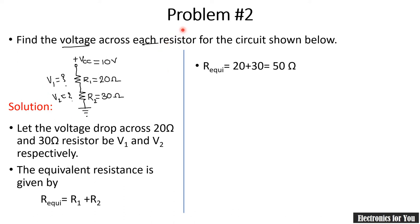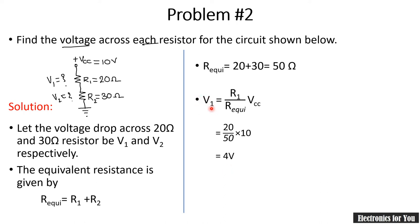Using the potential divider formula with VCC as the supply voltage: V1 equals R1 divided by R-equivalent times VCC, which is 20 divided by 50 times 10, equals 4 volts. Similarly, V2 equals R2 divided by R-equivalent times VCC, which is 30 divided by 50 times 10, equals 6 volts. So V1 is 4 volts and V2 is 6 volts.